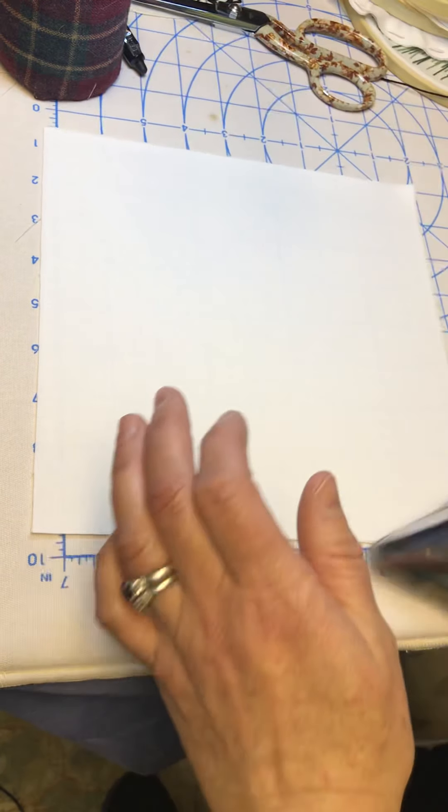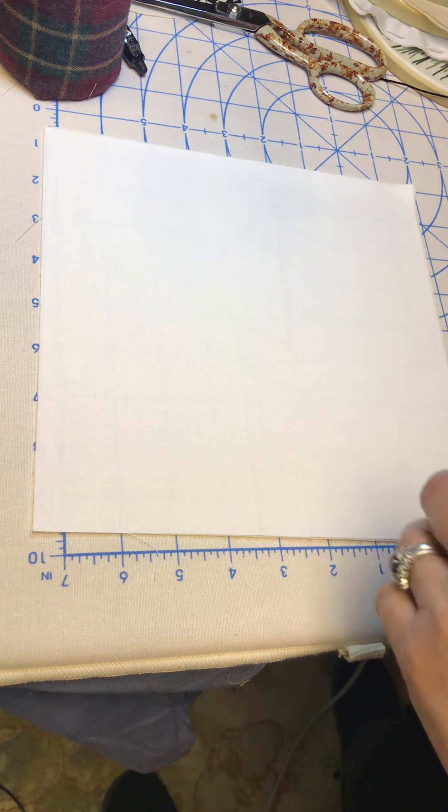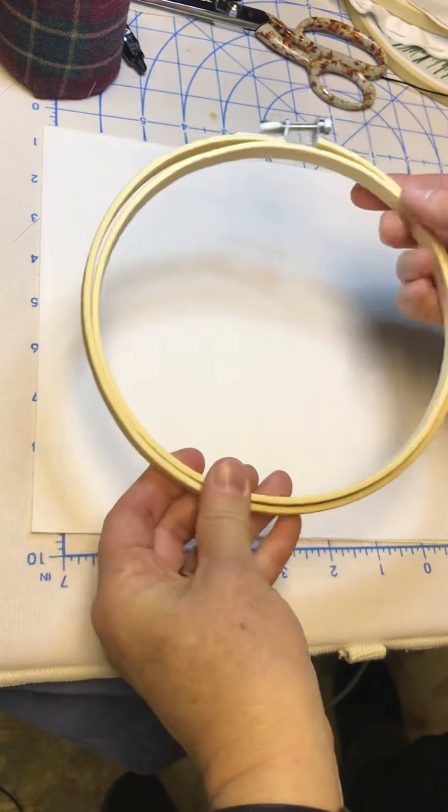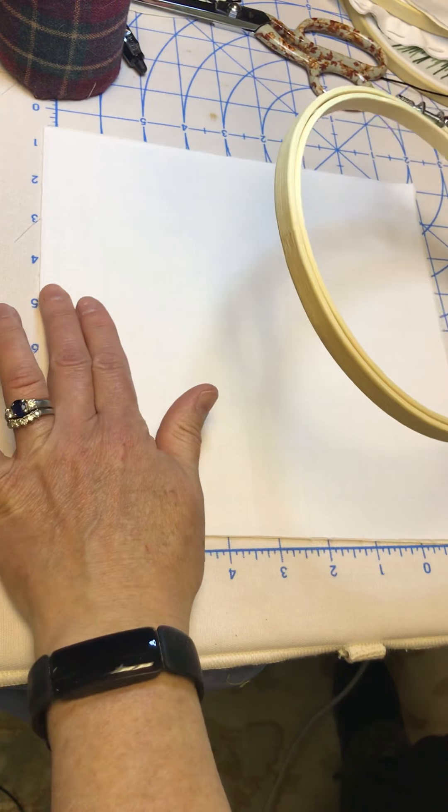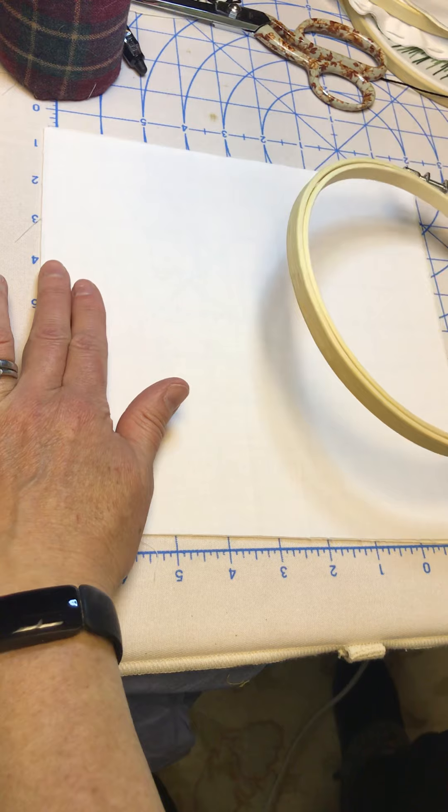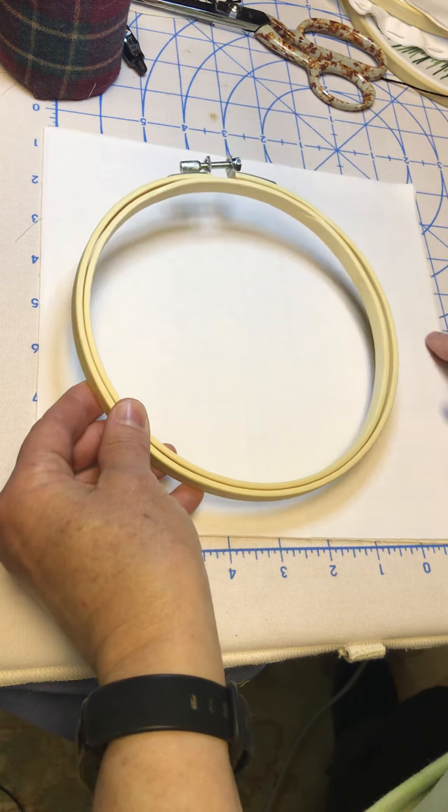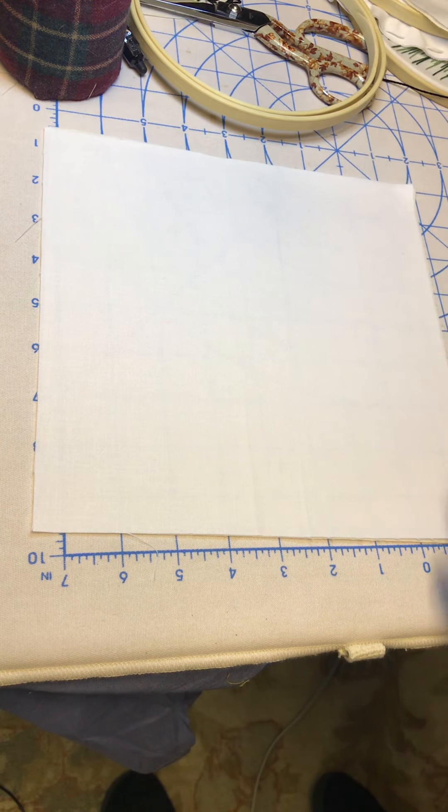So this square of fabric is cut to a nine inch square. It's for a hoop that's called a seven inch hoop. However, when I measure it, it's 6.75 inches. I give myself about an inch and a half larger when we trace the circle.